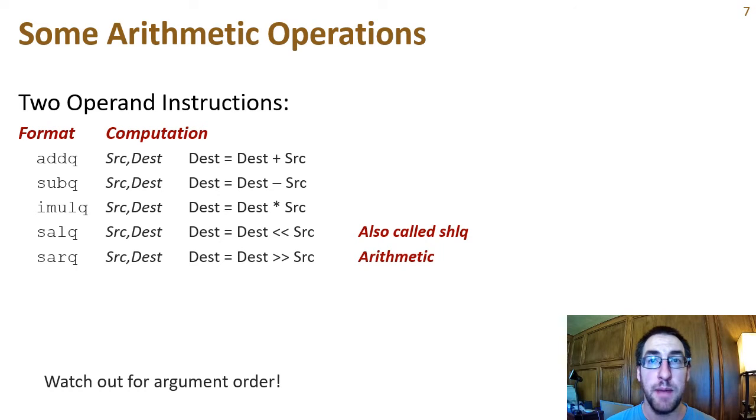Likewise, shift arithmetic right does a right shift of dest by the number of bits specified in the source, but it fills in from the left with whatever value the most significant bit has. So if the most significant bit is one, the shift will fill in ones, the same for zeros. Filling in the most significant bit preserves the value of the destination when interpreted as a two's complement integer. If you didn't know that, you might want to review two's complement arithmetic. The last shift instruction is shift right logical, which shifts the destination to the right by source bits and always fills with zeros.